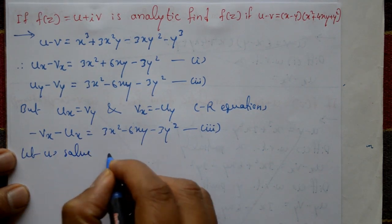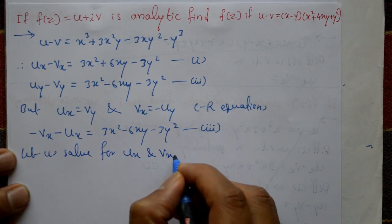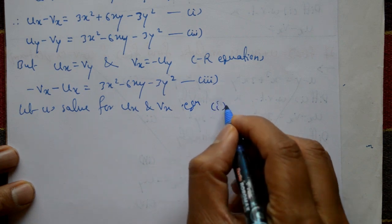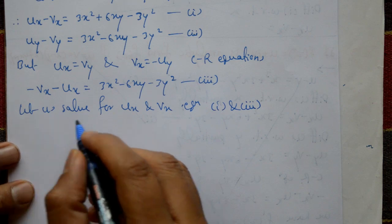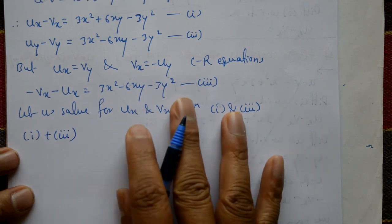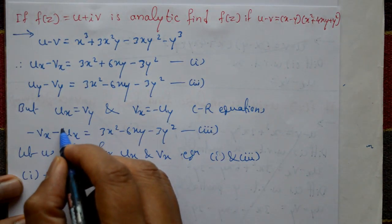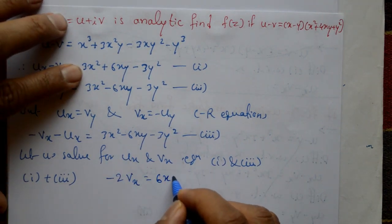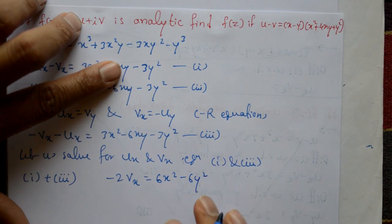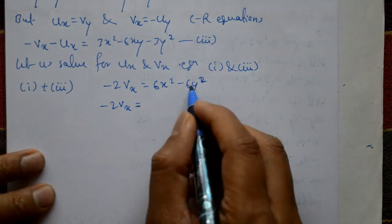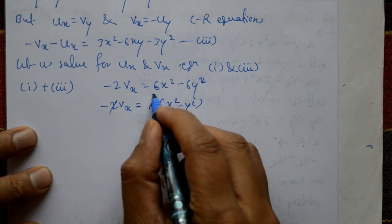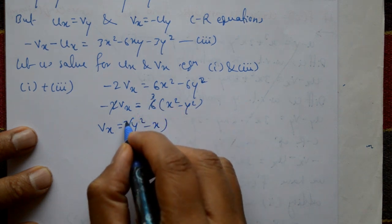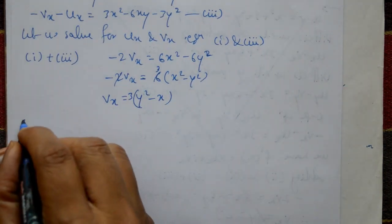Now solve for ∂u/∂x and ∂v/∂x from equations one and three. Adding equation one and equation three: the ∂u/∂x terms cancel, giving -2·∂v/∂x = 6x² - 6y². Simplifying: ∂v/∂x = 3(y² - x²).